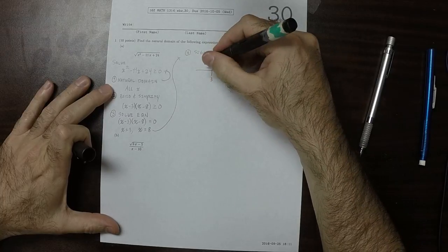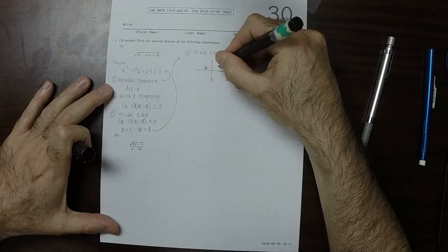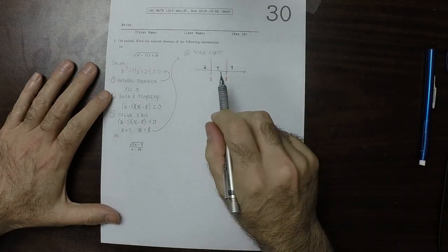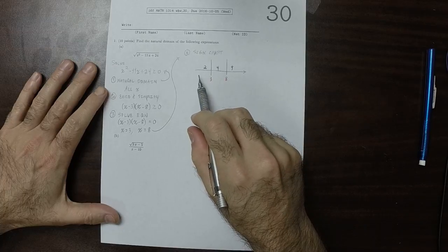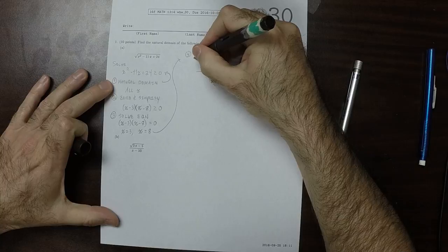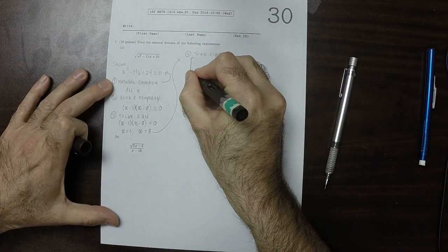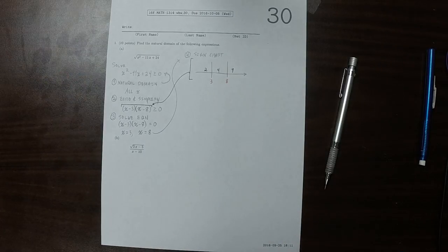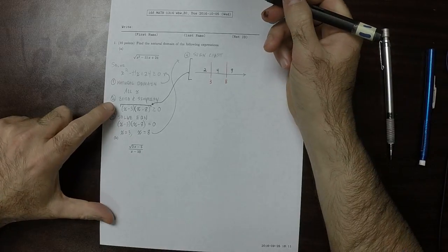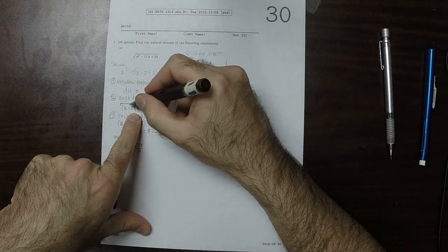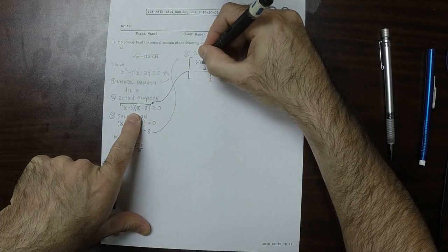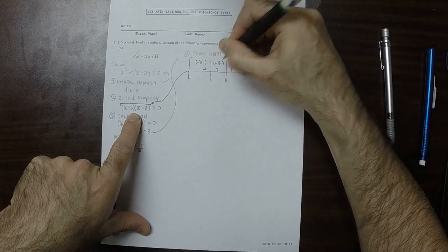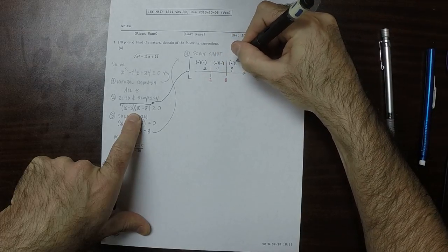Within each of these regions we can choose a point, so how about 2 and 4 and 9. So 2, 4, and 9. Now we're going to plug these values, these green values, into the left-hand side of this inequality. So we're going to plug them into there, and we're going to evaluate for sign. If we plug in 2 into those two factors, then we get negative and negative. If we plug in 4 into those two factors, we get positive and negative, and if we plug in 9 into those two factors, positive and positive.